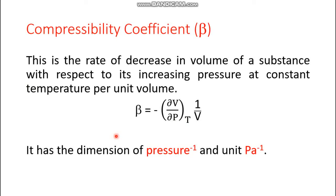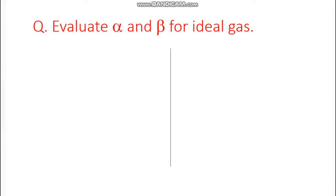What is the dimension of beta? Volume in the numerator is cancelled by the volume term in the denominator, leaving one over pressure. So the dimension of beta is pressure inverse, and its unit should be pascal inverse. Now let's discuss some questions.